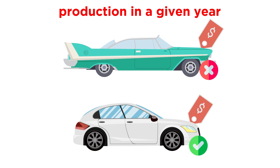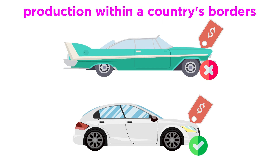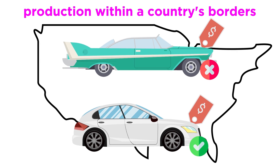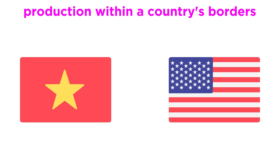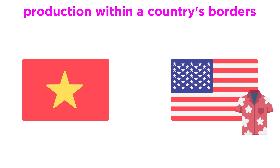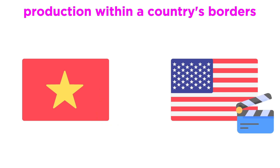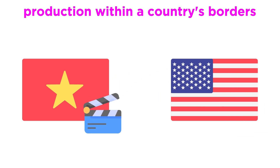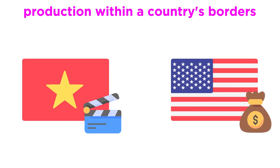Production is only counted if the good or service is produced within a country's borders. For example, if you are in the United States and buy a shirt imported from Vietnam, that adds to Vietnam's GDP, not the United States' GDP. But a movie made in the United States that is shown in theaters in Vietnam adds to the United States' GDP.